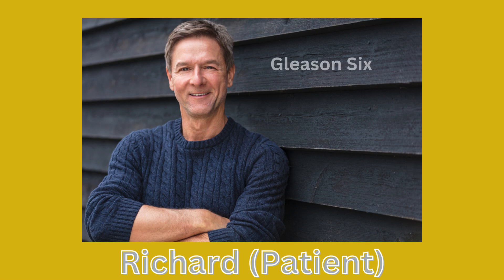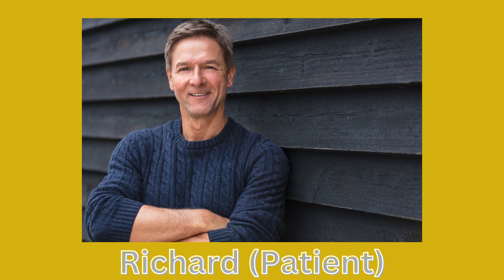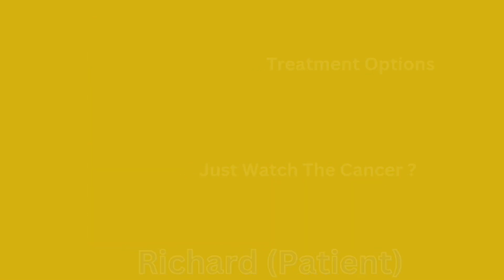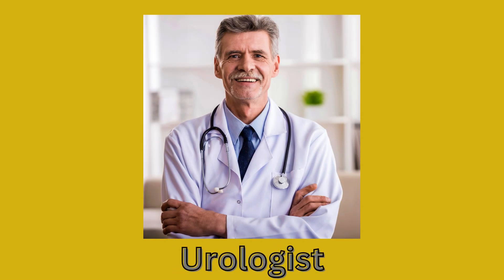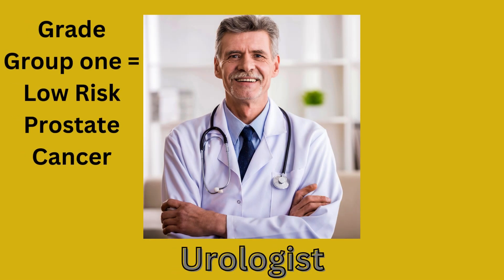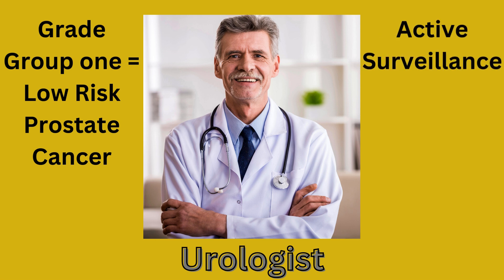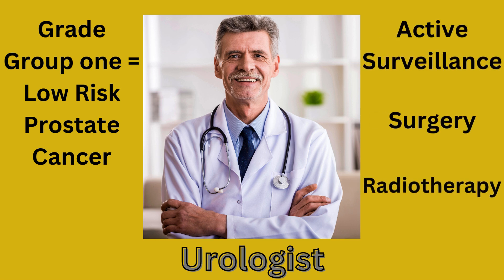Thank you, doctor. This is very informative, and I now understand that my Gleason score 6 means grade group 1 prostate cancer. I am interested in knowing what treatment options I have and whether it is okay to just watch the cancer. Your cancer is grade group 1, which is considered low-risk prostate cancer, and in those cases you have many treatment options, including active surveillance, surgery, or radiotherapy.